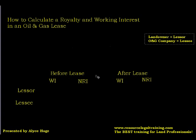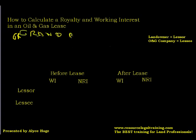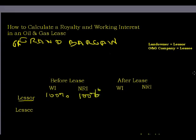We're going to look at that for before a lease and after a lease. In order to understand a royalty calculation, you really have to understand the basics of what we call the grand bargain. The grand bargain in the law basically says that the lessor, before there is an oil and gas lease, owns a 100% working interest and a 100% net revenue interest.